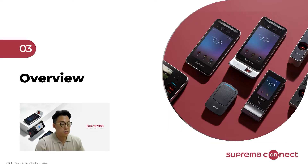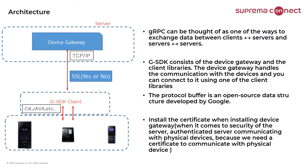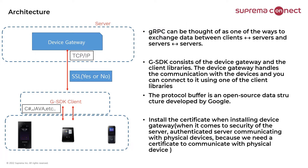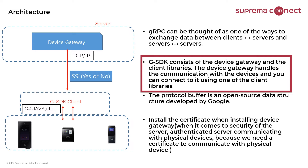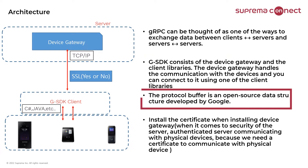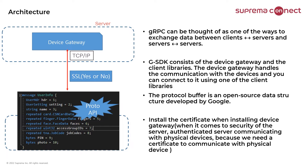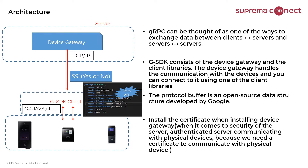Let's take a look at what gRPC is. gRPC is a modern communication framework introduced in 2015, and it's based on the cloud native computing foundation. GSDK consists of the device gateway and client libraries. Protocol buffers are files with functions defined — you can think of them as a form of contract for communication. In a nutshell, GSDK is a way to exchange data between client and server, and server to server.